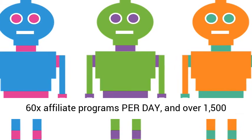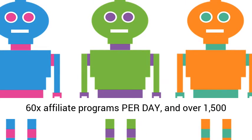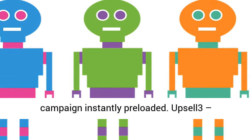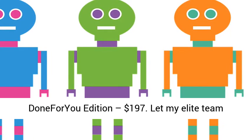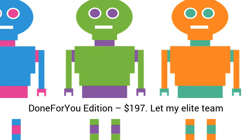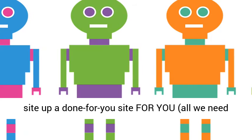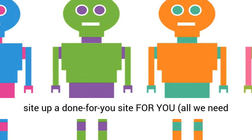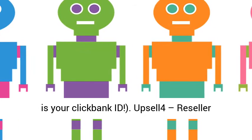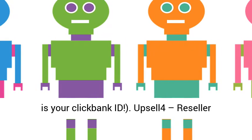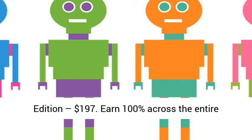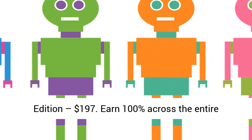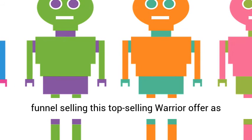Upsell 3 — Done For You Edition, $197: Let my elite team set up a done-for-you site for you — all we need is your ClickBank ID. Upsell 4 — Reseller Edition, $197: Earn 100% across the entire funnel selling this top-selling Warrior offer as if it was your own.